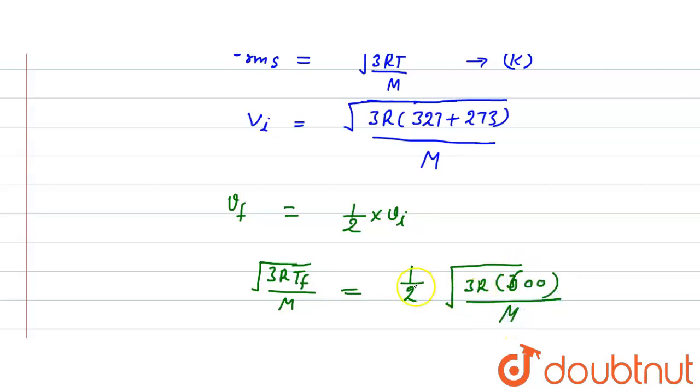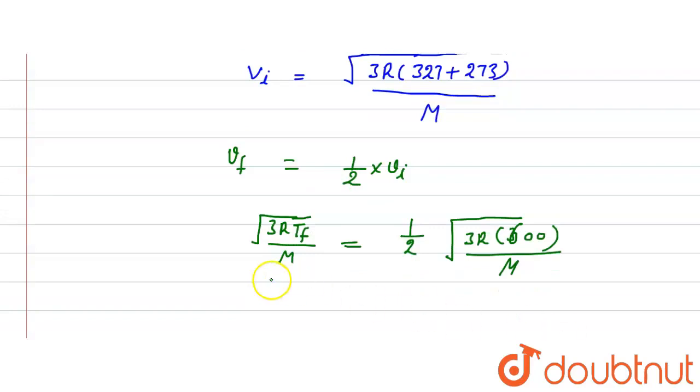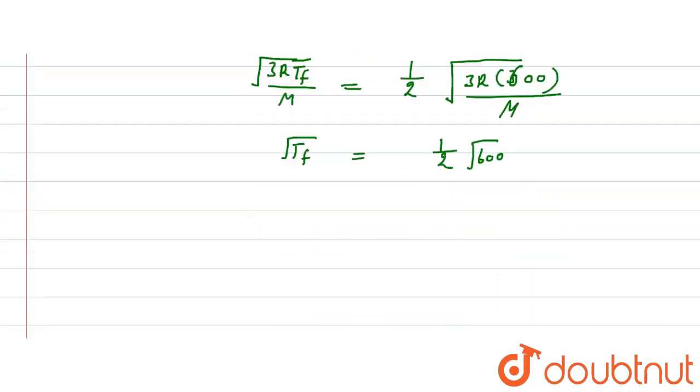So this term is cancelled here, and T_final is equal to half under root of 600. Now that T_final is equal to...